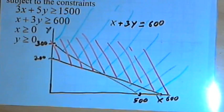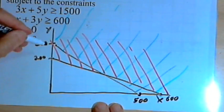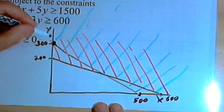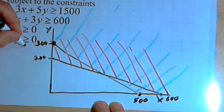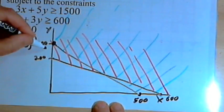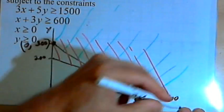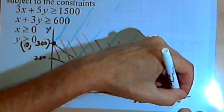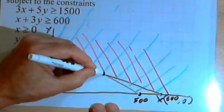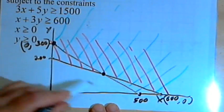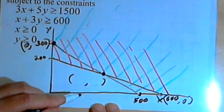The next step is going to be to find the corner points. I've got a corner point here on the y-axis that's at 0,300. I've got another corner point on the x-axis that's at 600,0. And I want to find this last corner point where the two lines intersect. So let's find what the x and y values are for that.